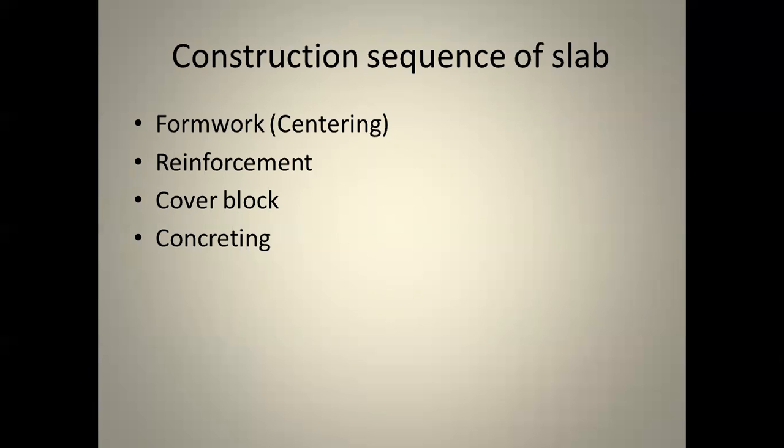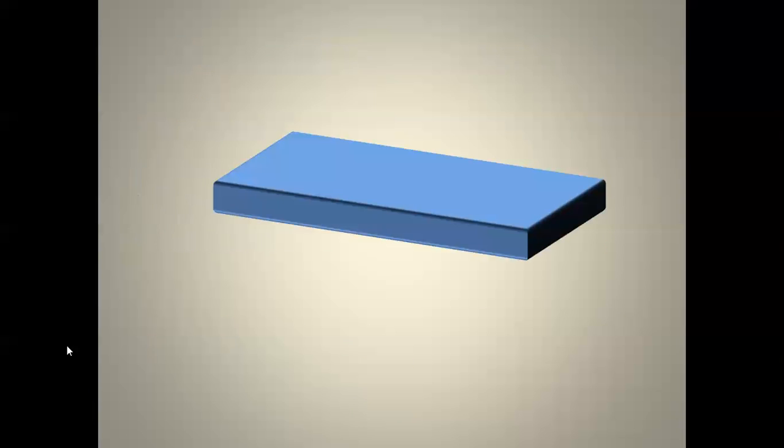The construction sequence is: first, arrange the formwork (centering); second, arrange the reinforcement bars; third, place the cover blocks and place the reinforcement bars above them; fourth, do the concreting.